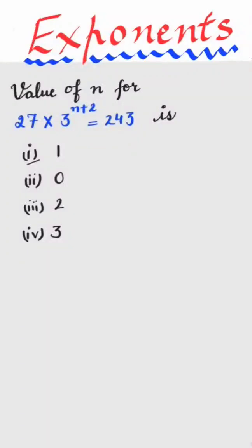Value of n for 27 into 3 raised to power n plus 2 is equal to 243 is. First of all, we will write 27 as 3 raised to power 3 into 3 raised to power n plus 2 is